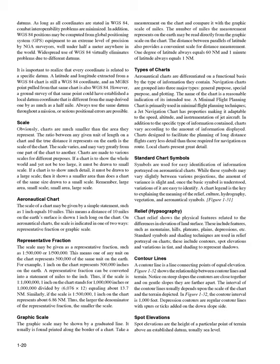Types of Charts. Aeronautical charts are differentiated on a functional basis by the type of information they contain. Navigation charts are grouped into three major types: general purpose, special purpose, and plotting. A minimal flight planning chart is primarily used in minimal flight planning techniques. A jet navigation chart has properties making it adaptable to the speed, altitude, and instrumentation of jet aircraft. Charts designed to facilitate the planning of long-distance flights carry less detail than those required for navigation en route. Standard chart symbols are used for easy identification of information portrayed on aeronautical charts. A chart legend is the key to explaining the meaning of the relief, culture, hydrography, vegetation, and aeronautical symbols.